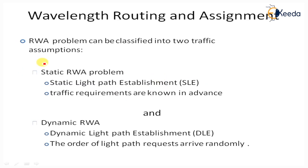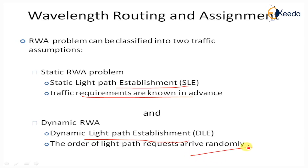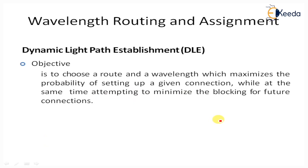Based on that, there are static and dynamic cases. In the static case, static light path establishment is used and the traffic requirement is known in advance. In the dynamic case, known as Dynamic Light Path Establishment or DLE, light path requests arrive randomly. For DLE, the objective is to choose a route and wavelength which maximizes the probability of setting up a given connection.